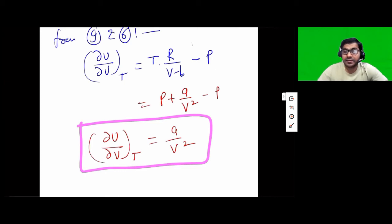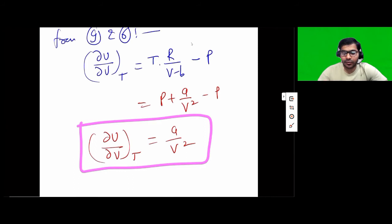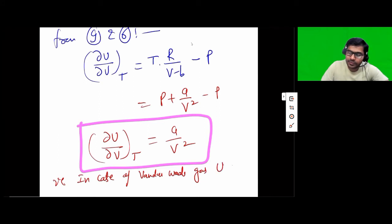In case of an ideal gas, U was a function of temperature only. However, in case of the Van der Waal gas, U is a function of both temperature and volume. This is the important result we draw from this discussion.